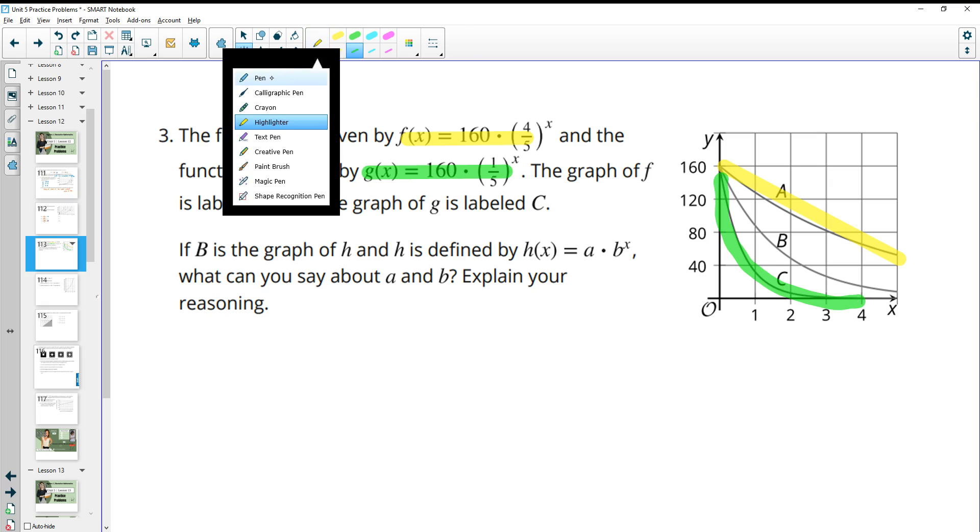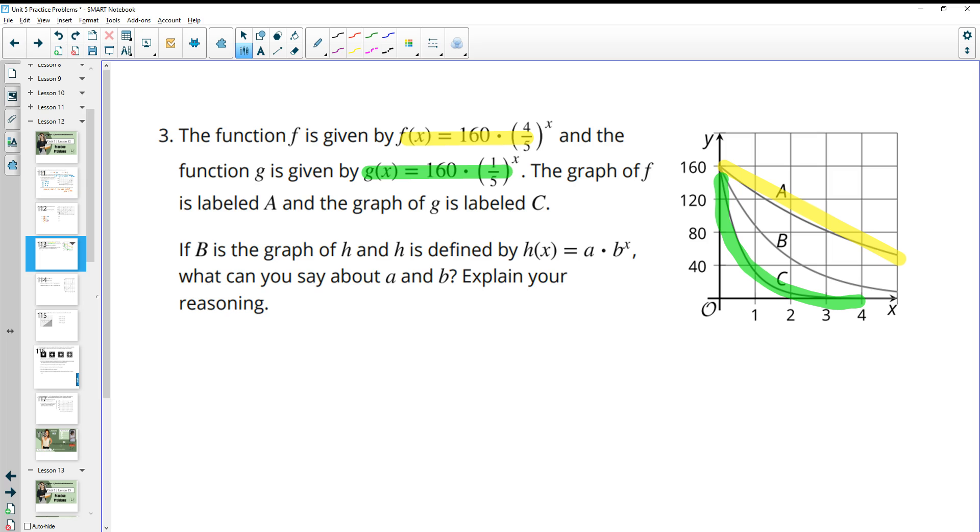Then it wants us to determine, so for b is the graph of h and h is defined by this. What can we say about it? So what can we say about this graph that's in between those two? We can say that it's got the same initial value. They're starting at the same spot. So the a value is definitely 160, so we know that a equals 160.